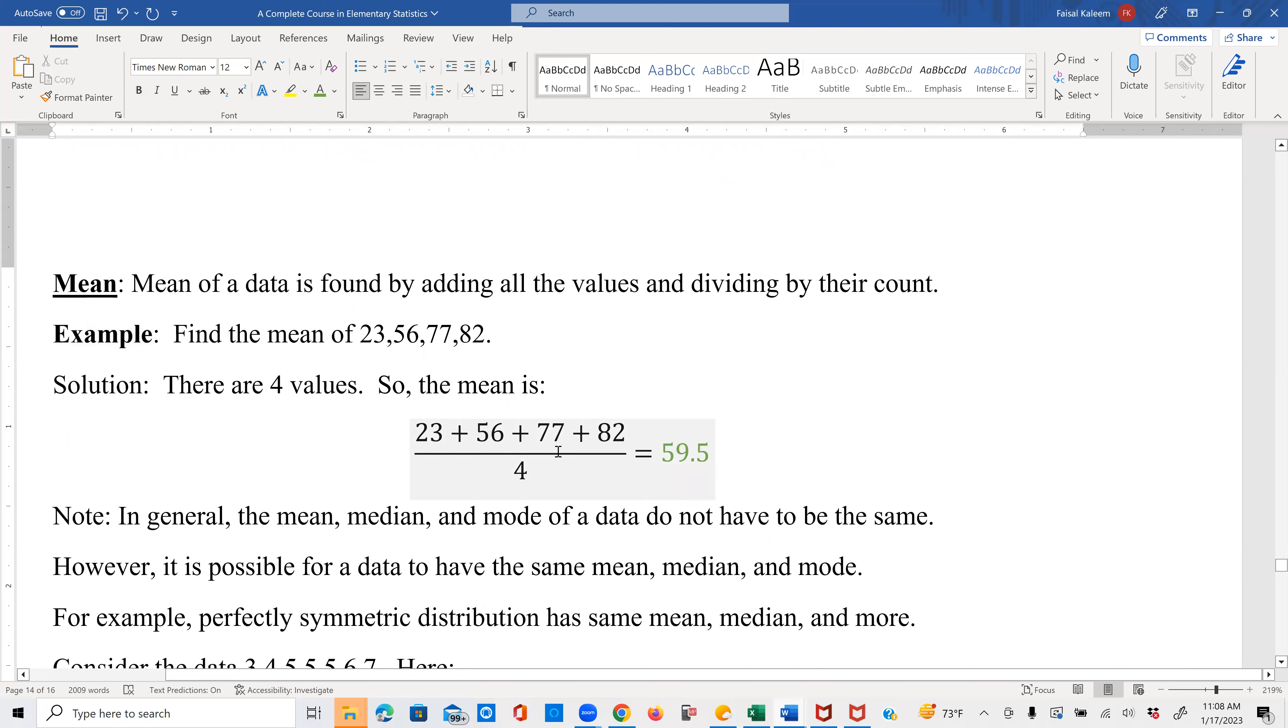And in general, the mean, median, and mode of a data do not have to be the same. However, it is possible for a data to have the same mean, median, and mode. For example, a perfectly symmetric distribution has same mean, median, and mode.